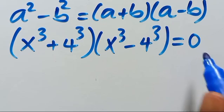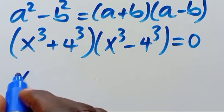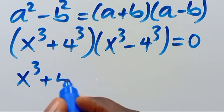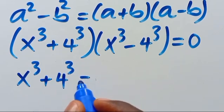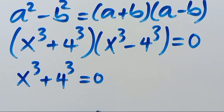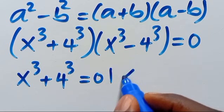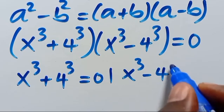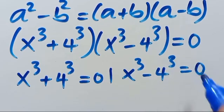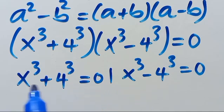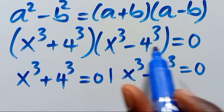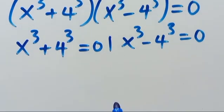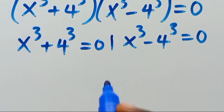Since this product equals zero, either x cubed plus 4 cubed equals 0, or x cubed minus 4 cubed equals 0. One of the expressions must equal zero for the whole product to equal zero. Let's pick them one at a time. Let's say we have Case 1.